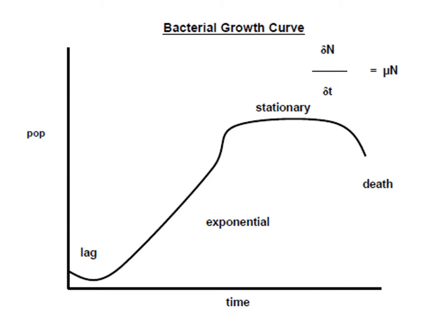This leads us to the microbial growth curve. On the y-axis is population number; on the x-axis is time. When bacteria are introduced to fresh culture media, bacterial counts slightly drop from the initial concentration. This is the lag phase — also called the acclimatization phase — where cells are adjusting and adapting to the new environment.